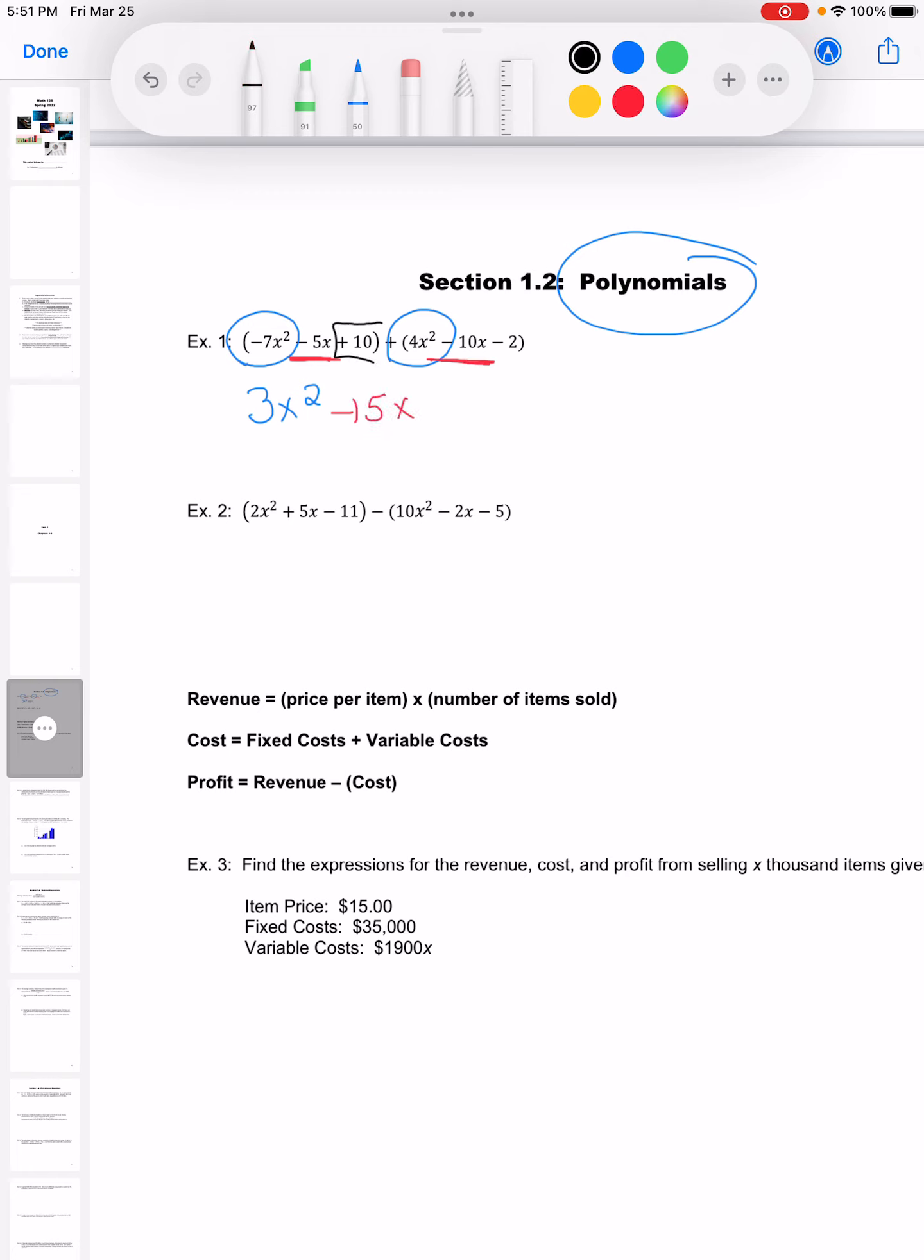And last, we've got a 10 minus 2. That gives me a positive 8. So my final answer is just that polynomial right there that I've combined the terms for.